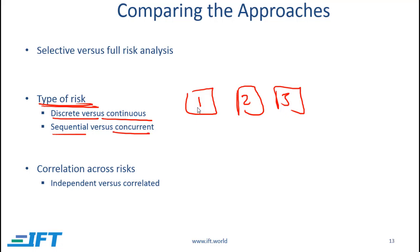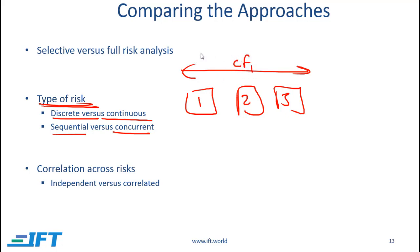On the other hand, if a risky event can take a range of values — so it's a continuum — for example, if you think about evaluating the value of a Home Depot store and one of the variables is the base year cash flow, and this base year cash flow can take a whole range of values, then this is continuous risk.